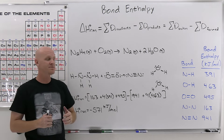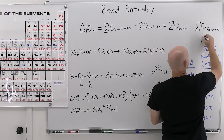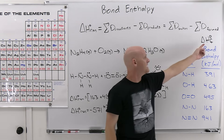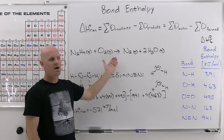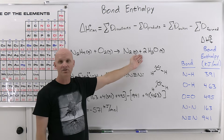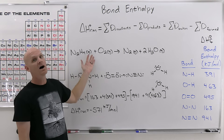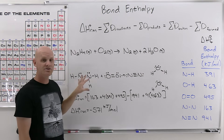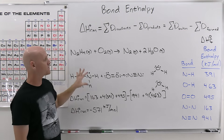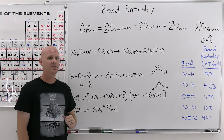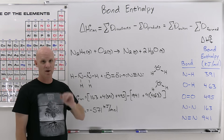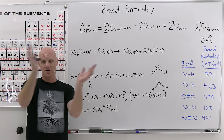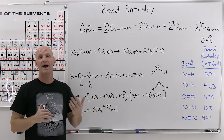Don't confuse bond enthalpy values with enthalpy of formation values. If a table uses delta H sub F notation, those are enthalpies of formation, and that's when it's products minus reactants — because it's the products that are being formed. With bond enthalpies, it's the reactants where bonds are being broken, so it's reactants minus products. To summarize the three methods: bond enthalpies → reactants minus products; enthalpies of formation → products minus reactants; Hess's law → add up and manipulate reactions until they equal the desired reaction.